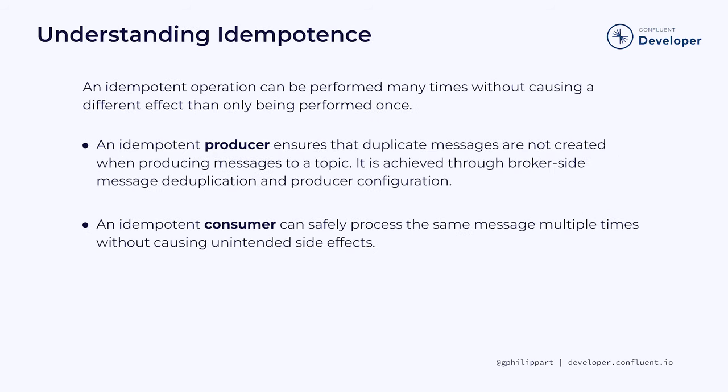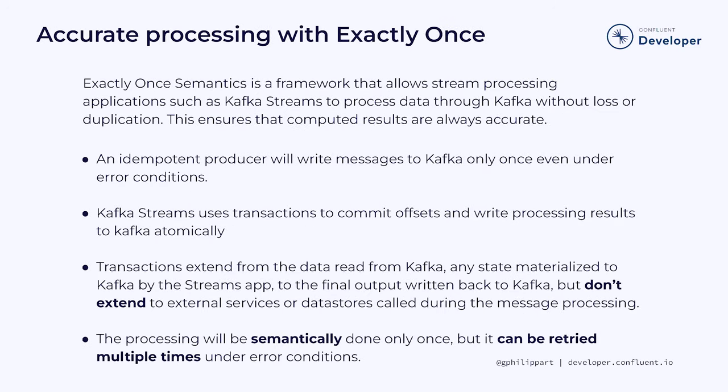We've mentioned the word "idempotent" several times already during this course. An idempotent operation can be performed many times without causing a different effect than only being performed once. An idempotent producer ensures that duplicate messages are not created when producing messages to a topic — achieved through broker-side message deduplication and producer configuration. An idempotent consumer can safely process the same message multiple times without causing unintended side effects. Exactly Once Semantics is a framework that allows stream processing applications such as Kafka Streams to process data through Kafka without loss or duplication, ensuring computed results are always accurate.